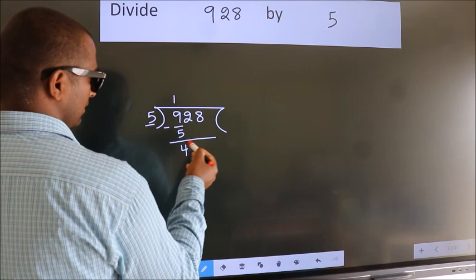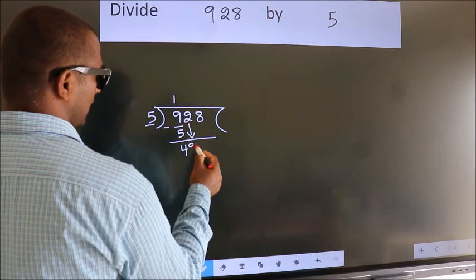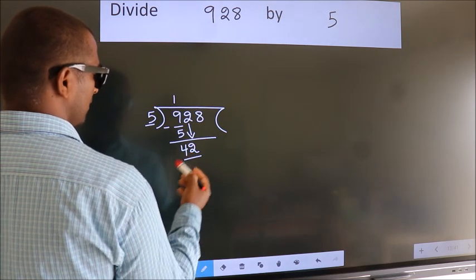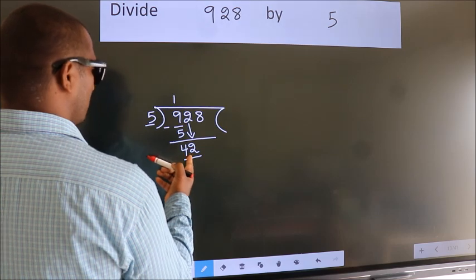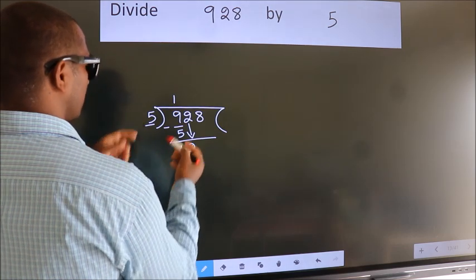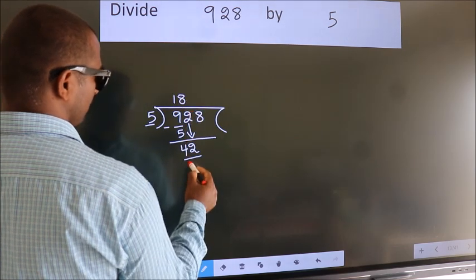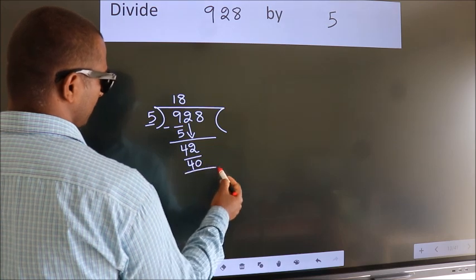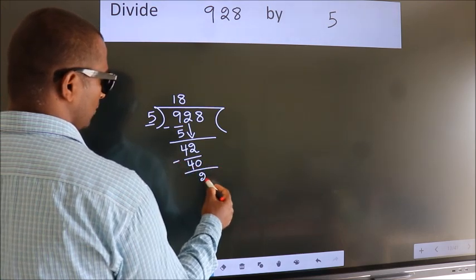After this, bring down the beside number. So 2 down. So 42. A number close to 42 in 5 table is 5 8s 40. Now we subtract. We get 2.